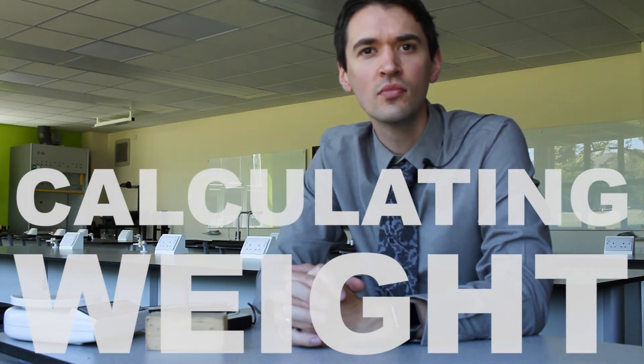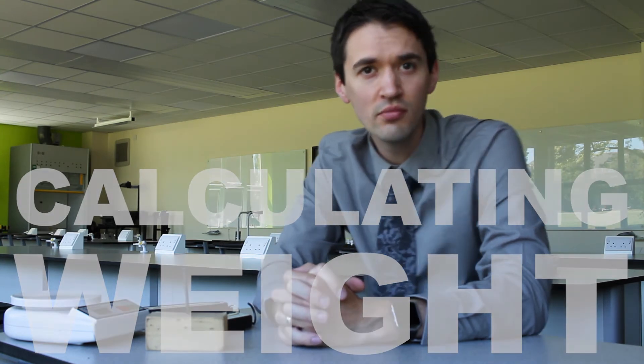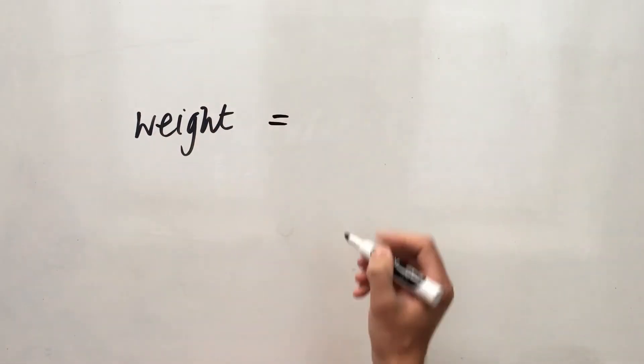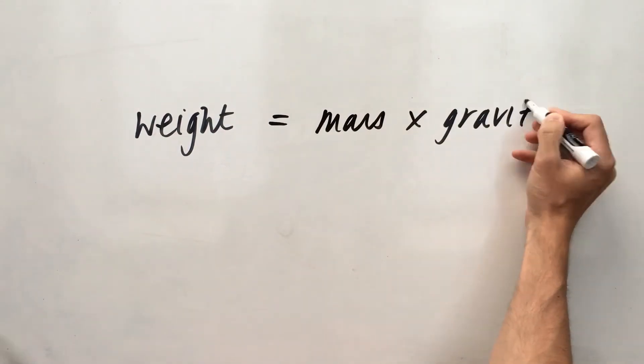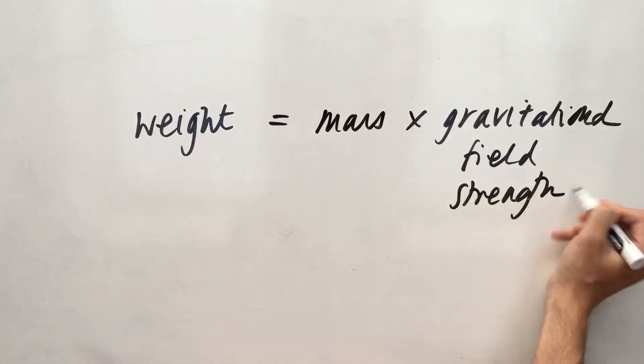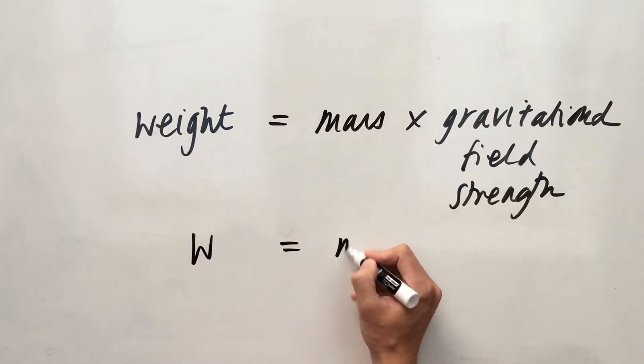Calculating weight. So it's a simple equation we've got to learn. Just three things in it. The weight of an object is equal to the mass of the object times by the gravitational field strength at that point. We can write that in symbols as just W equals MG.